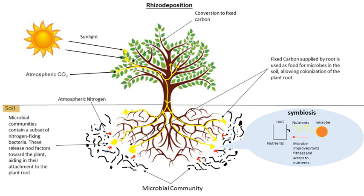Monotropoid mycorrhizae are associated with plants in the Monotropaceae, which lack chlorophyll. Many orchids are also achlorophyllous for at least part of their life cycle. Thus these mycorrhizal-plant relationships are unique because the fungus provides the host with carbon as well as other nutrients, often by parasitizing other plants. Achlorophyllous plants forming these types of mycorrhizal associations are called mycoheterotrophs.